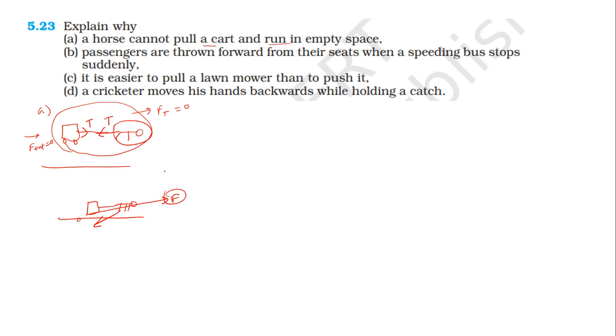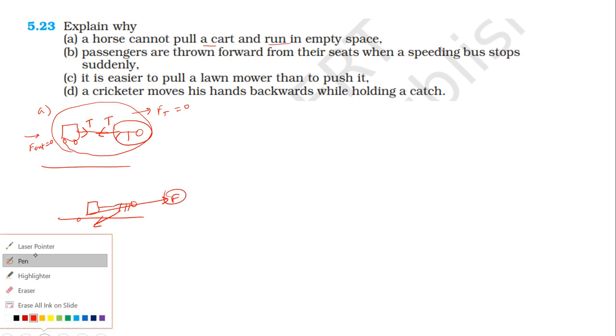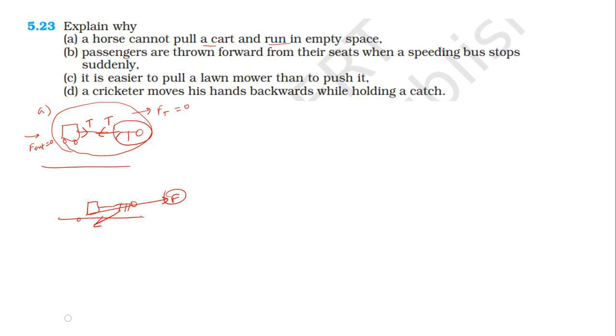Next solution: passengers are thrown forward from their seats when a speeding bus stops suddenly. The passengers are on the bus and moving with it. When the bus suddenly stops, the passengers tend to continue in their state of motion due to inertia.